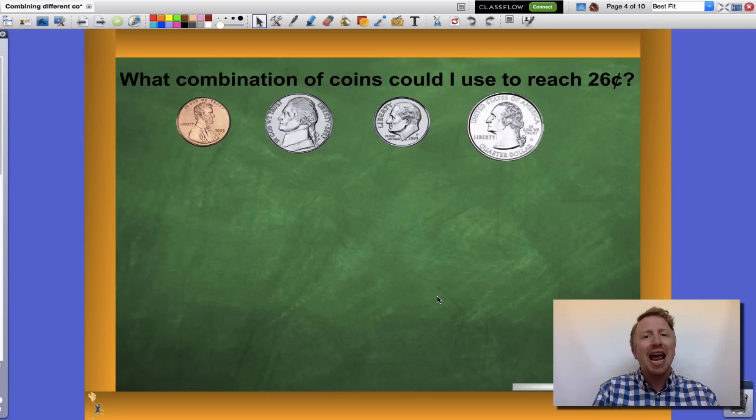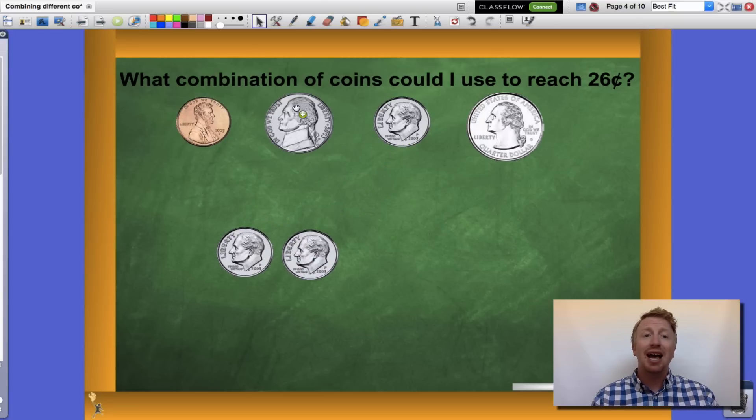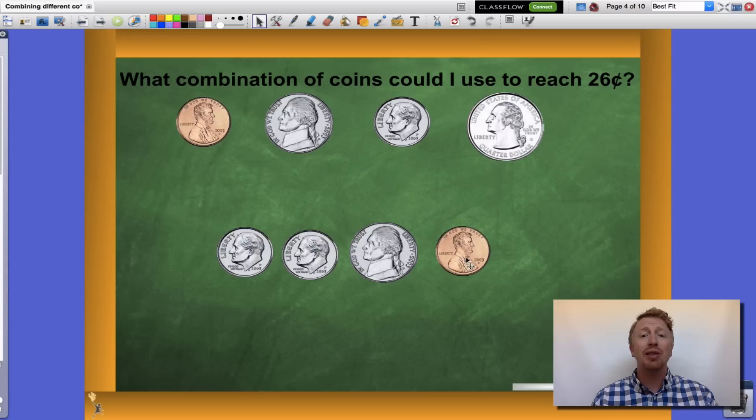Now let's say I didn't have any quarters. Could I do it with dimes? Sure I can. Two dimes together gets me to 20 cents. I can add one nickel to get me to 25 cents, and finally my penny will get me the rest of the way there to 26 cents.